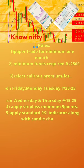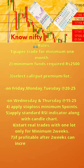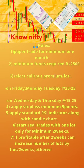5. Apply standard RSI indicator along with candle chart. 6. Start real trades with 1 lot only for a minimum of 2 weeks. 7. If profitable after 2 weeks, you can increase the number of lots by 1 lot for 2 weeks. Otherwise, continue with 1 lot for a further 2 weeks.